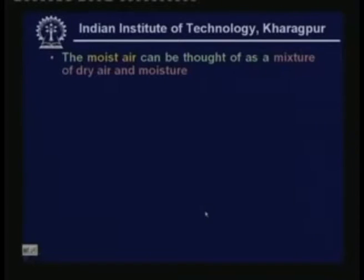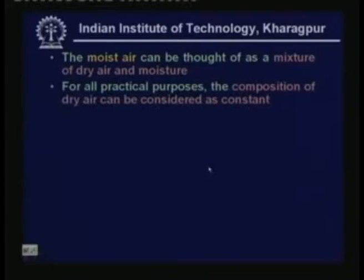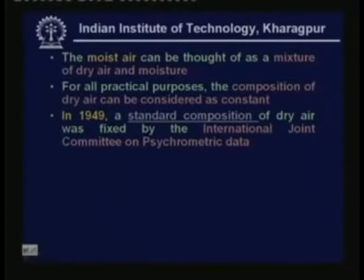Moist air can be thought of as a mixture of dry air and moisture. For all practical purposes, the composition of dry air can be considered as constant — it does not vary from place to place or with altitude. In 1949 a committee was formed to fix the composition of dry air for calculation purposes. The standard composition of dry air was fixed by the international joint committee on psychrometric data.